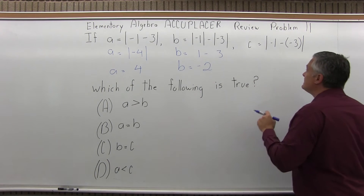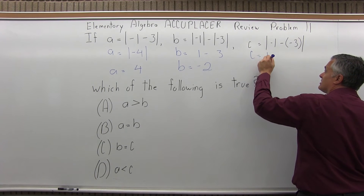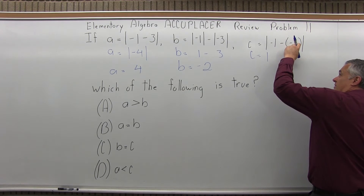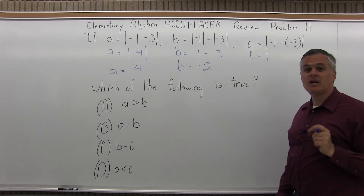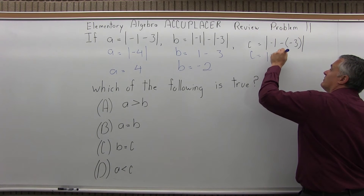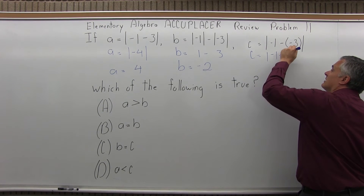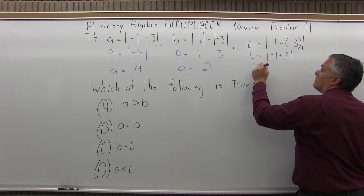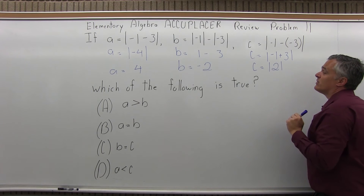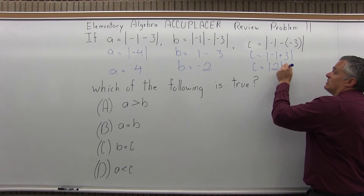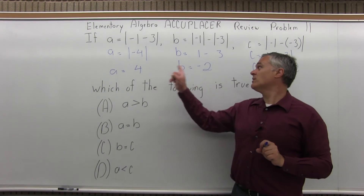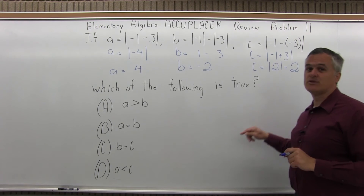Finally, C equals the absolute value of negative 1 minus a minus 3. That minus and minus together cancels and becomes positive, so we have the absolute value of negative 1 plus 3. Negative 1 plus 3 is positive 2, so C equals the absolute value of 2, which is just 2. So A is 4, B is negative 2, and C is positive 2.